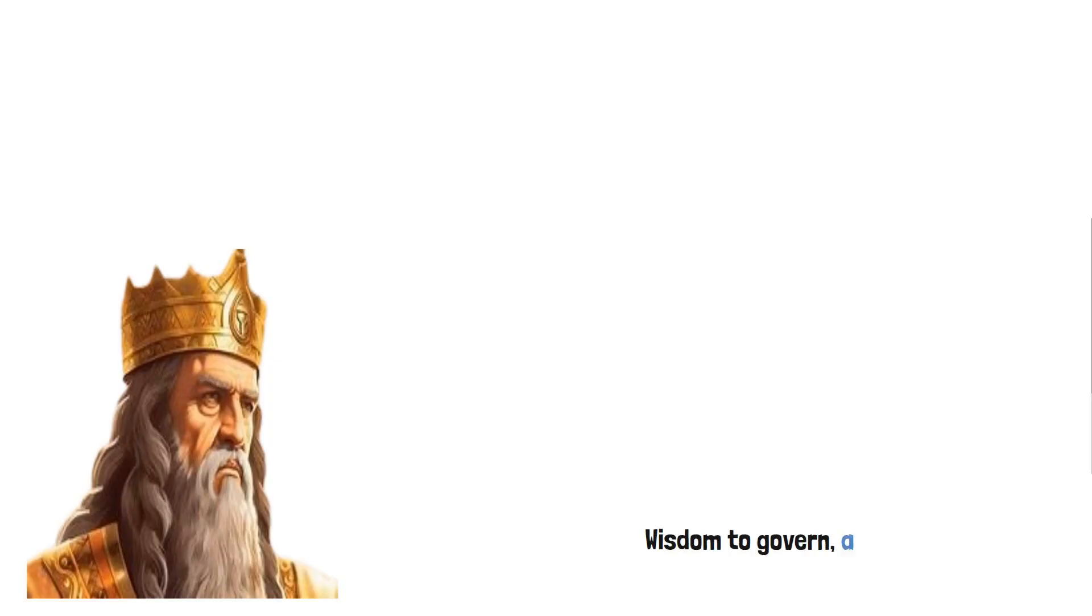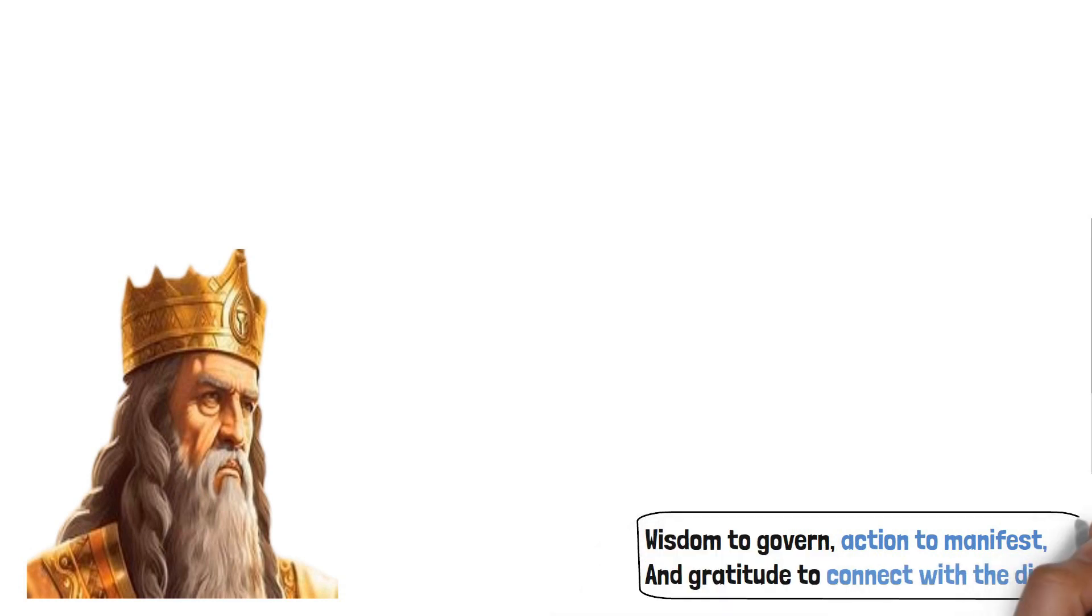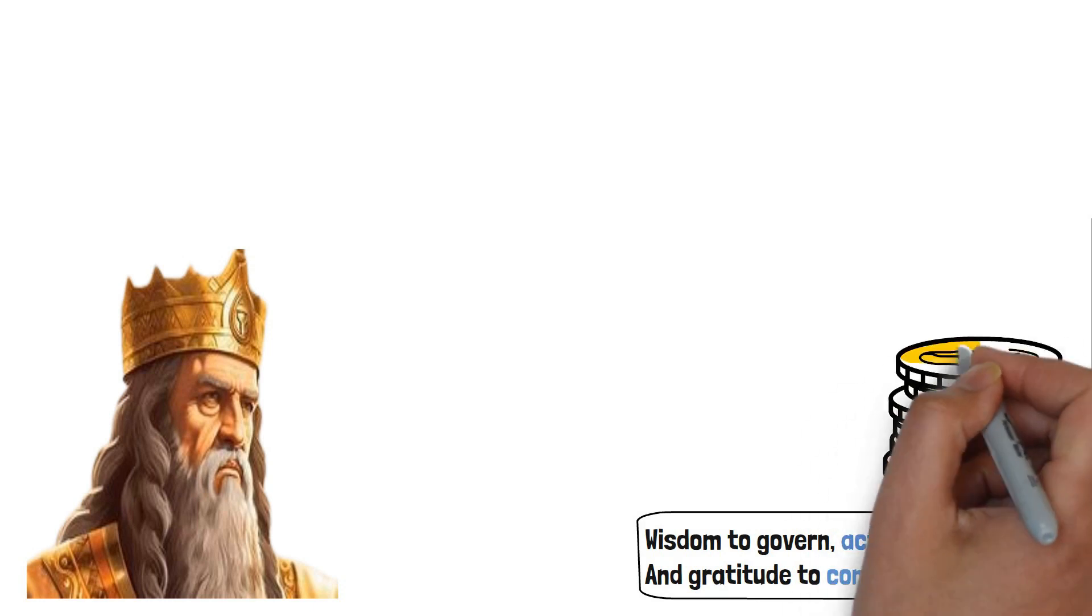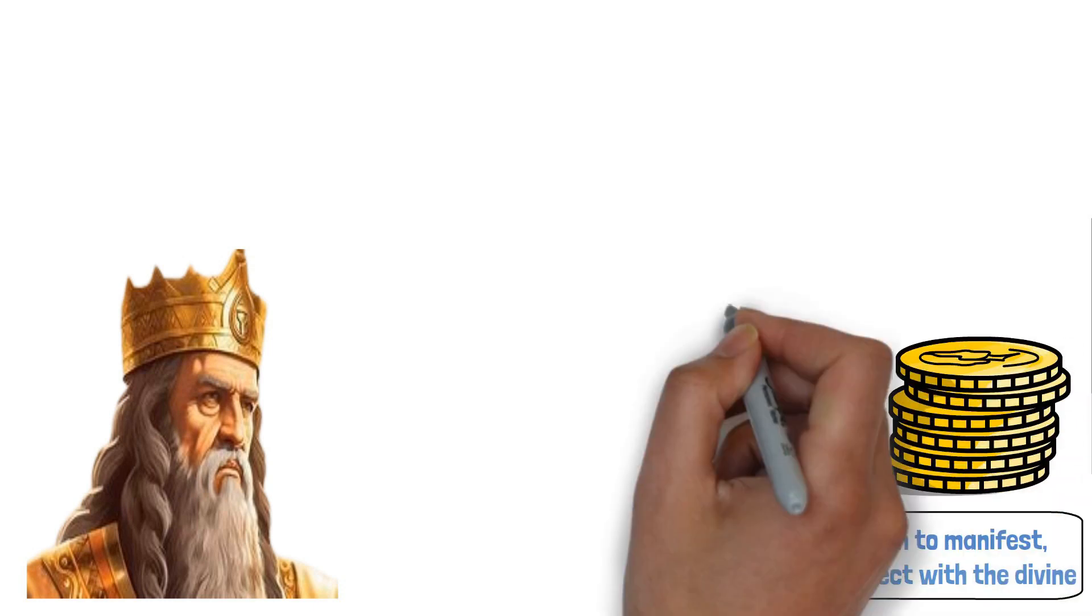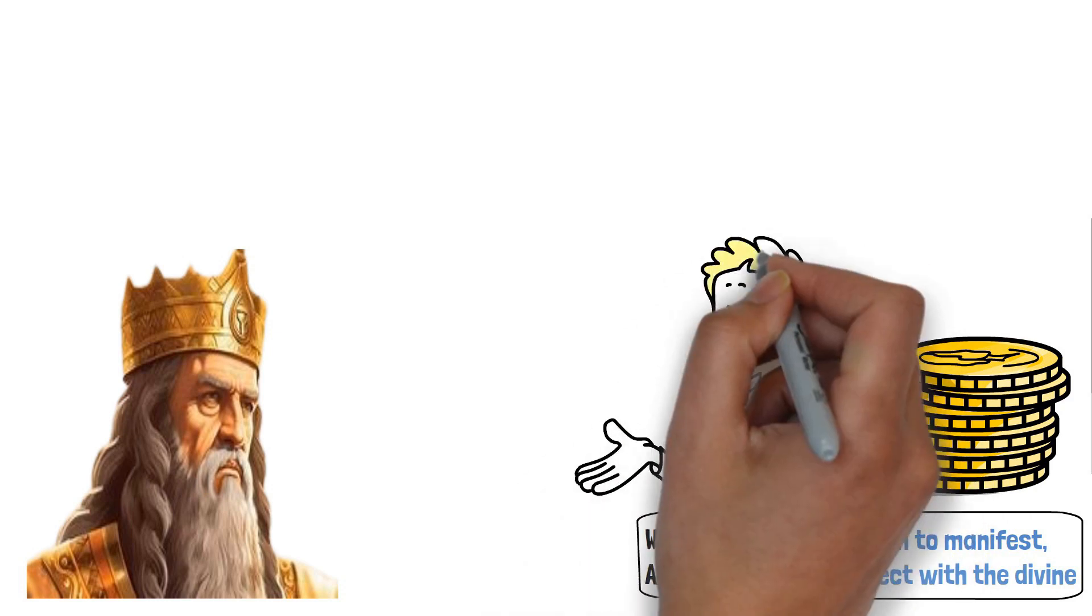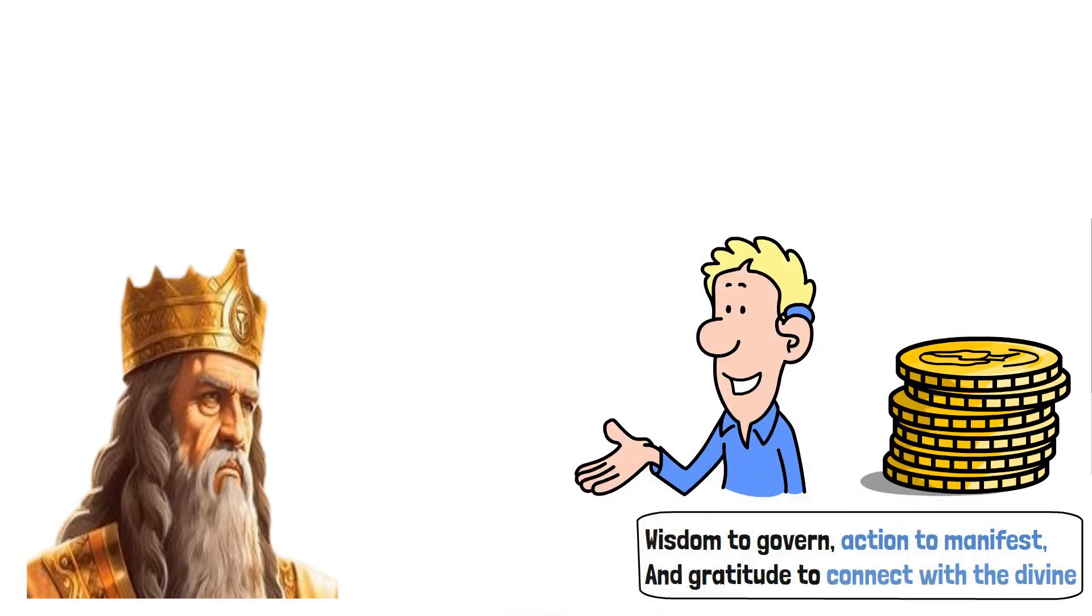Wisdom to govern, action to manifest, and gratitude to connect with the divine. These codes hold the key to unlocking abundance in your life. So, remember, wealth isn't just about material possessions. It's about embodying these principles and aligning yourself with the universal flow of prosperity.